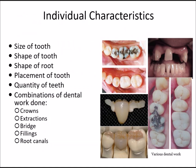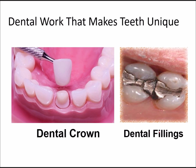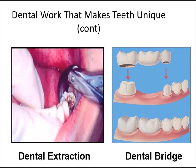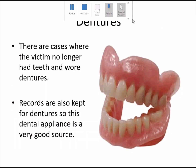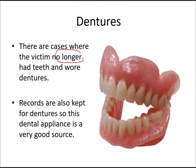Individual characteristics of teeth useful for personal identification include: size and shape of teeth, shape of the root, placement of teeth, quantity of teeth, and combination of dental work such as crowns, extractions, bridges, fillings, and root canals. These features are especially important for identifying unidentified or decomposed bodies. Dentures may also be used — there are cases where victims wore dentures, and dental appliances can be traced back to a person.